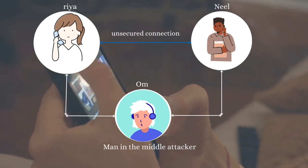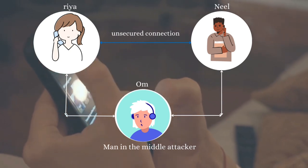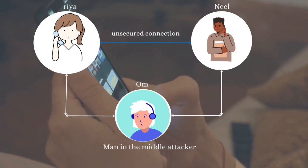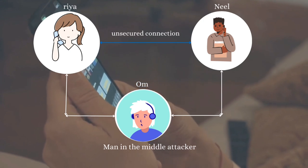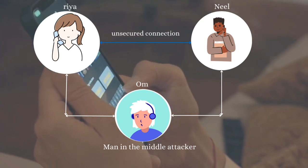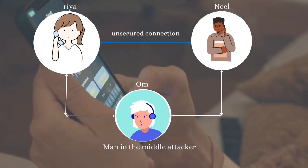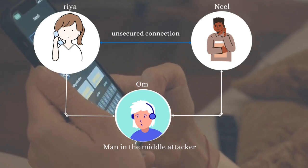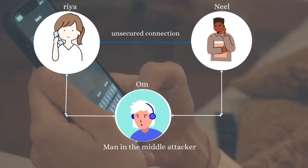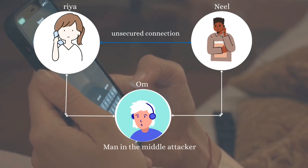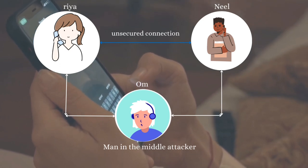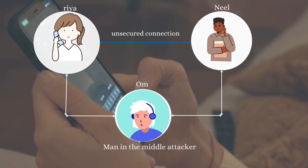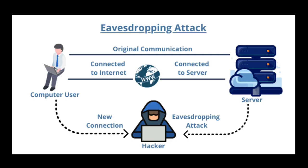Let's talk about a practical example of an eavesdropping attack shown on the screen. The example explores a man-in-the-middle attack. Suppose Rhea and Nils are communicating over an unsecure network. An attacker named Om wants to intercept the communication. Om can set up a fake wireless access point and trick Rhea and Nils into connecting to it. In this way, Om inserts himself into the middle of the communication between Rhea and Nils.